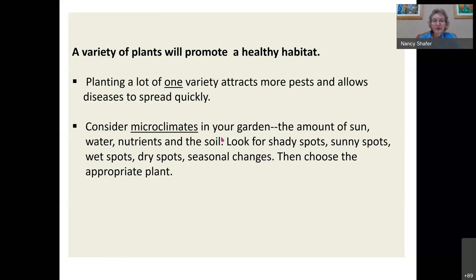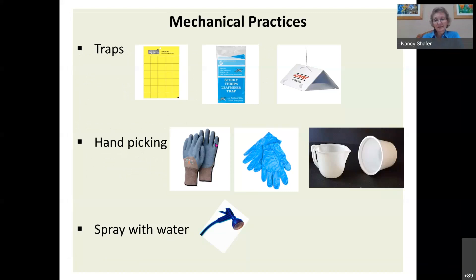A variety of plants in your garden creates a healthier habitat. Planting one variety attracts more pests and allows diseases to spread quickly — for example, if three tomato plants in a row got spider mites, they all got spider mites. Think about microclimates: how much sun a spot gets, water access, and nutrient levels. Clay soil may need amendment. Consider all of these before planting.